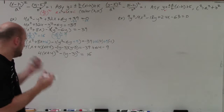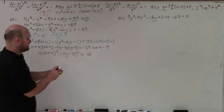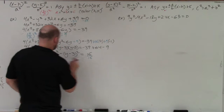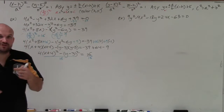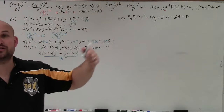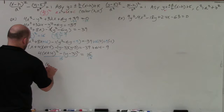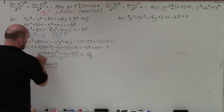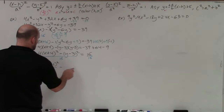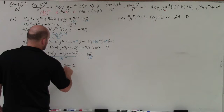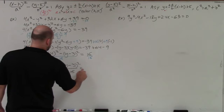That gives us 16 on the right side. But remember, it has to equal 1. So I divide by 16 on both sides. Just like the distributive property, you divide the 16 to both terms. So I have (x + 4)² over 4 minus (y − 3)² over 16 equals 1.